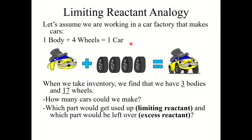We can also look at a body-plus-wheels example when making a car. To make a car: one body plus four wheels equals one car. When we take inventory, we find three bodies and 17 wheels. How many cars can we make? Obviously, we can only make three cars. The bodies get used up first — once we make those three cars, we use all three bodies. So bodies are the limiting reactant. The wheels would be the excess reactant. We would use 12 wheels making those three cars, which leaves five wheels left over.